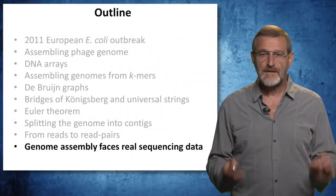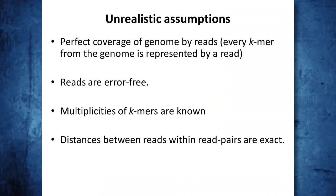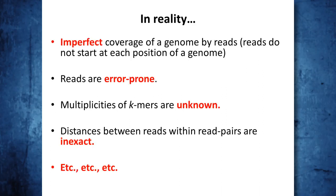We will now discuss some challenges you will face while working with real sequencing data. In the past, we made some unrealistic assumptions: perfect coverage of the genome by reads (meaning every k-mer from the genome is represented by a read), error-free reads, known multiplicity of k-mers in the genome, and exact distances between reads within read pairs. In reality, we have imperfect coverage of the genome by reads, error-prone reads, unknown multiplicity of k-mers, and inexact distances between reads within read pairs. This makes the problem of genome assembly more difficult than what we considered before.